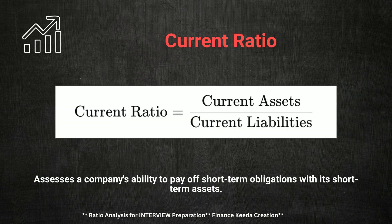Another critical ratio is the Current Ratio, which assesses a company's ability to pay its short-term liabilities with its short-term assets. The formula is Current Assets divided by Current Liabilities. A common interview question might be: what does a Current Ratio below one indicate? A Current Ratio below one suggests that a company may have liquidity issues, as it does not have enough short-term assets to cover its short-term liabilities. Conversely, a Current Ratio significantly above one may indicate that a company is not efficiently using its assets.